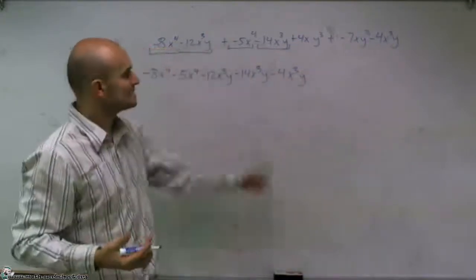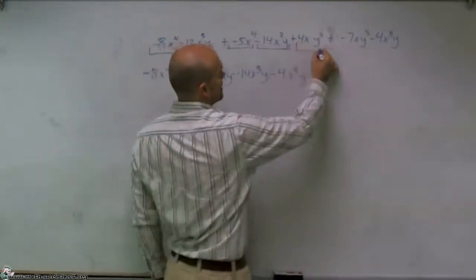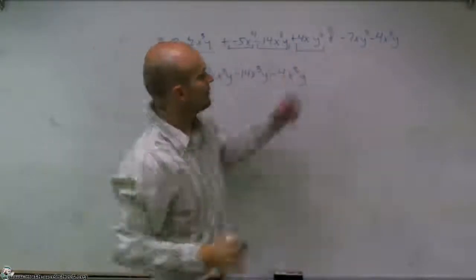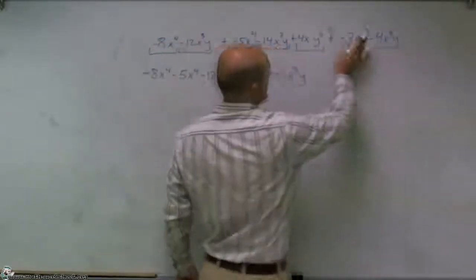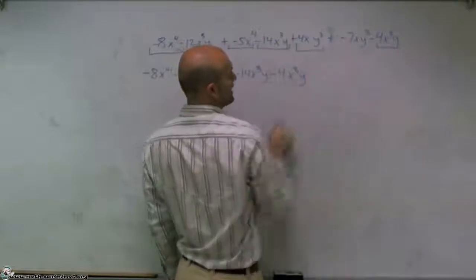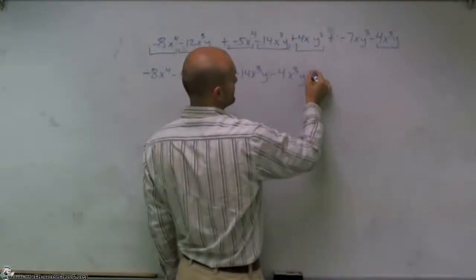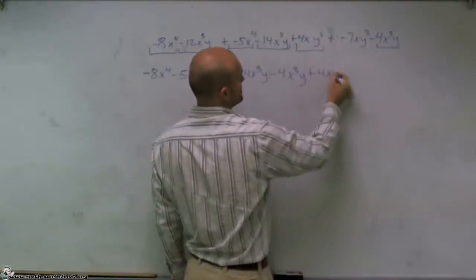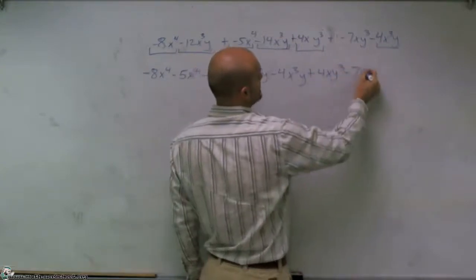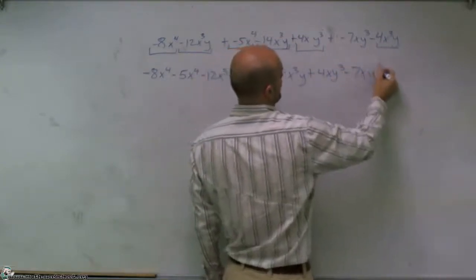And then now lastly, I look at this term and I see this has 4xy cubed. And that was the other one. Well, I can only combine that with negative 7xy cubed. So it's positive 4xy cubed minus 7xy cubed.